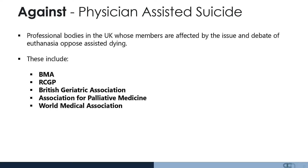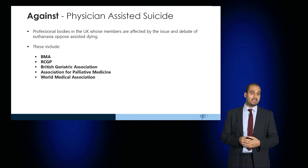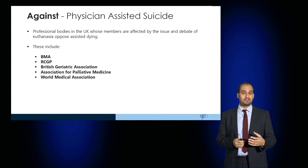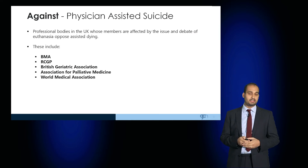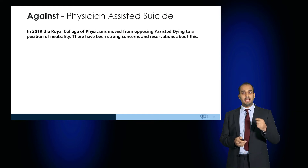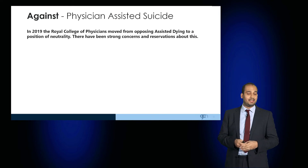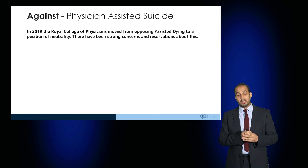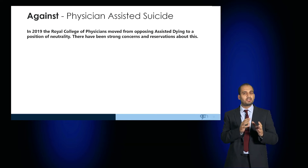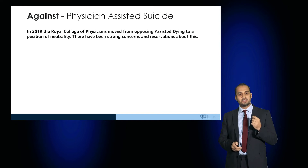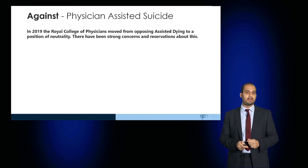There is large investment into a comprehensive range of high-quality palliative care services available to ensure patients die with dignity. Professional bodies in the UK whose members are affected by euthanasia oppose assisted dying, including the BMA, the RCGP, the Geriatric Association, the Association for Palliative Medicine, and the World Medical Association. However, in 2019 the Royal College of Physicians moved from opposing assisted dying to a position of neutrality, and there have been strong concerns and reservations about this.